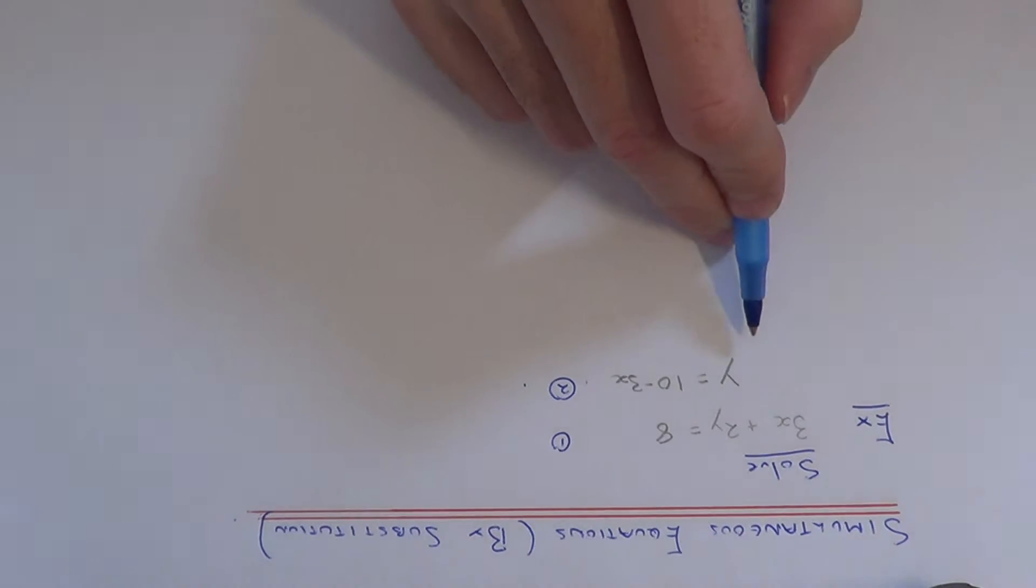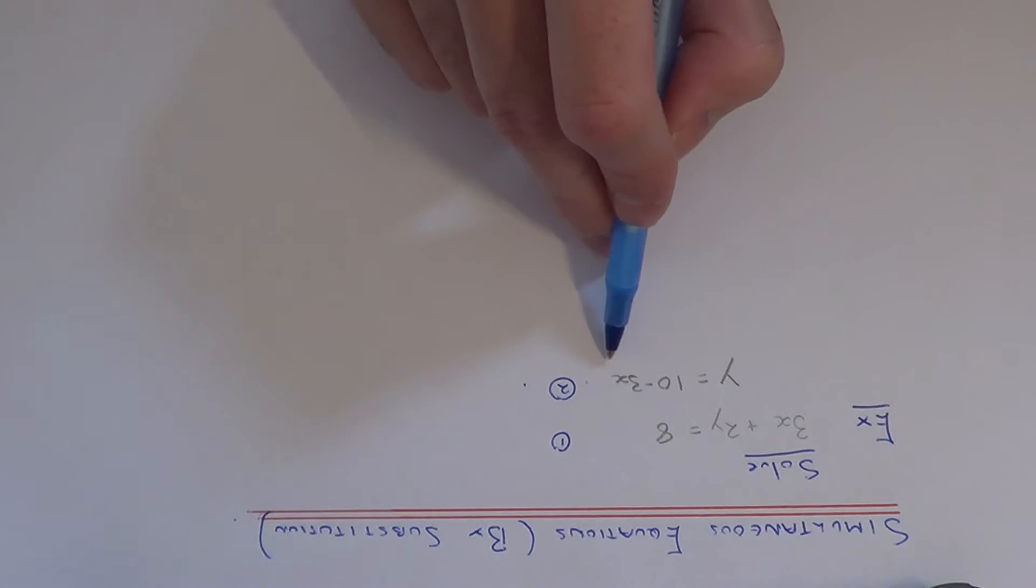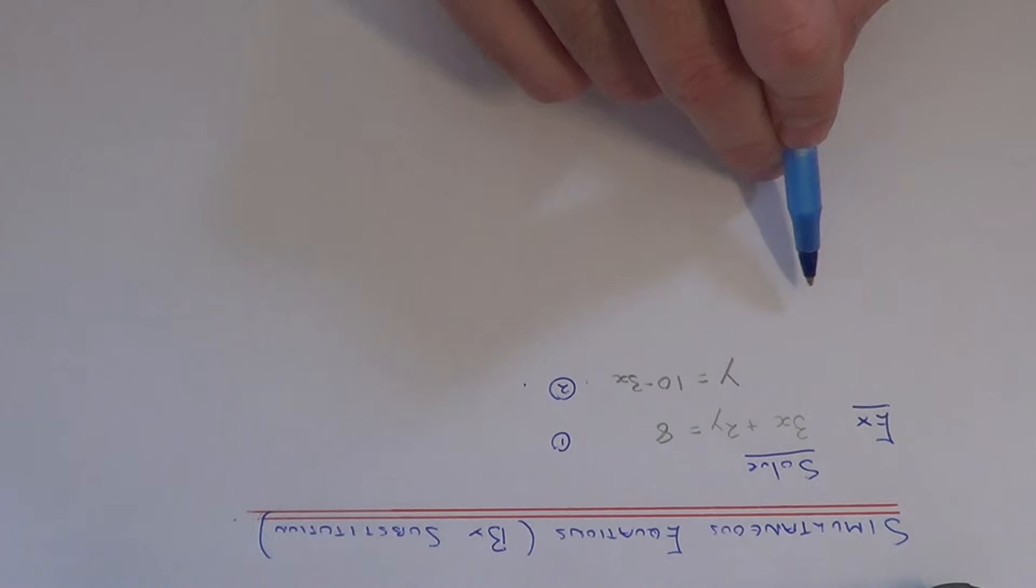So if you notice on the second equation, we notice that the y is the subject. So what I'm going to do is substitute 10 minus 3x into the first equation for y.